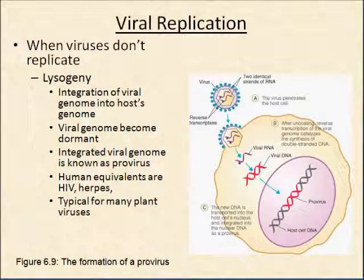Some viruses don't replicate rapidly — this is called a lysogenic virus. The viral genome actually gets integrated into the host genome and can be dormant or function at a very low level. Integrated viral genomes are known as proviruses. In humans, HIV is one example. People who have herpes are often asymptomatic for long periods of time, and then for whatever reason the virus gets activated and they can have a herpes outbreak, which eventually resolves. This pattern is actually typical for many plant viruses.